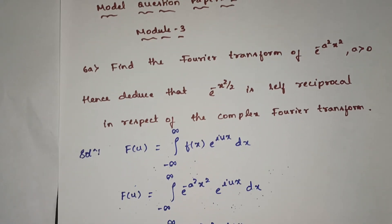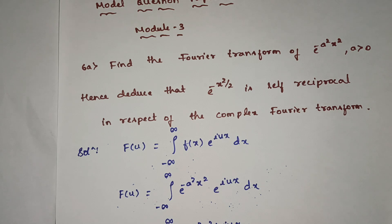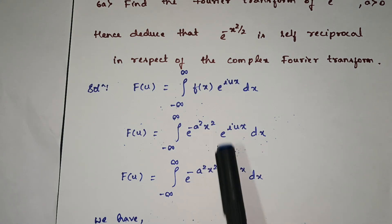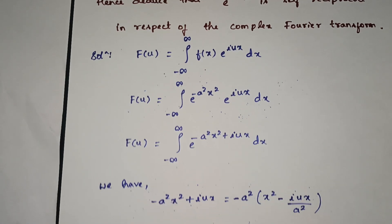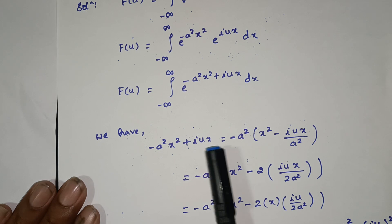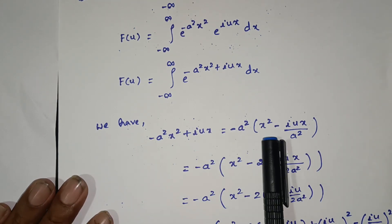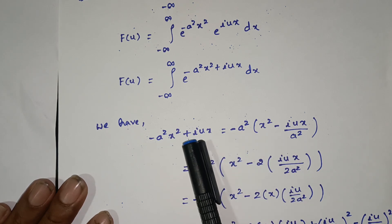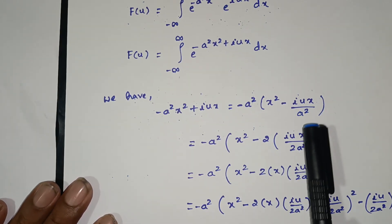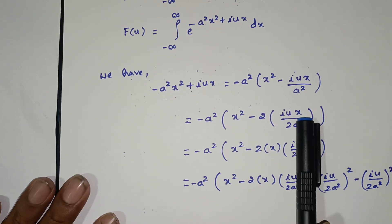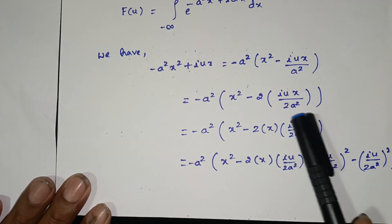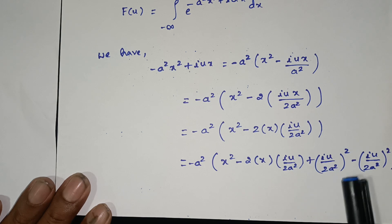Recap of the first part: F of u equals the formula from minus infinity to plus infinity of f of x times e power iux dx, where f of x equals e power minus a square x square. The exponent minus a square x square plus iux is simplified: minus a square into x square, and the iux term is handled by completing the square, giving minus a square into x minus iu by 2a square whole square plus iu by 2a square whole square.